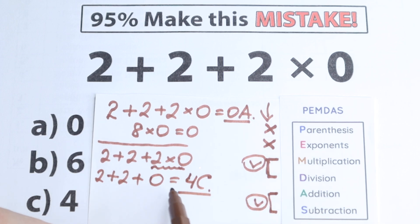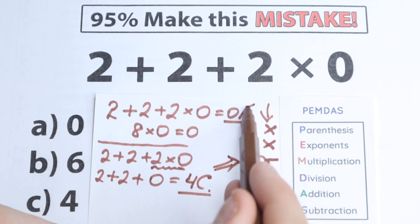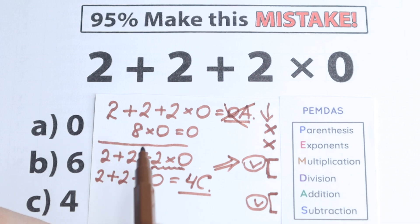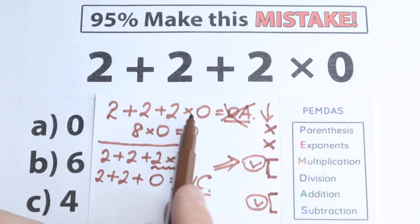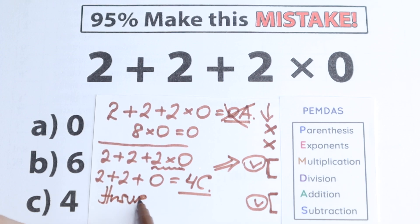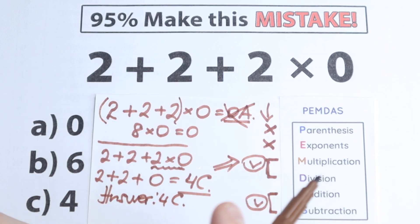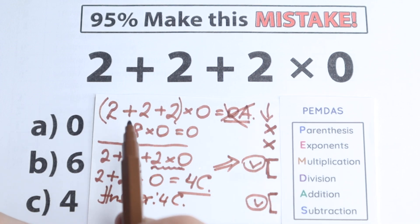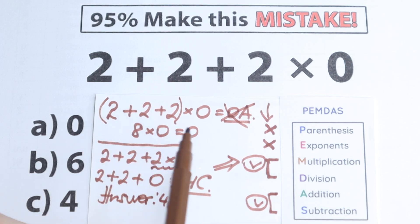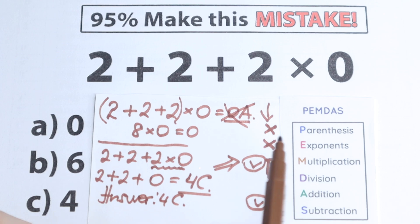So we have two solutions but only one is correct. The correct answer is 4 — option C — because we solved it according to PMDMC. The other solution is absolutely wrong. But there is one really important moment: if you put parentheses around the addition, then the first step becomes parentheses — 2 plus 2 plus 2 gives 6, and 6 times 0 gives 0. So with parentheses the answer is 0, but in our case without parentheses, the correct answer is option C: 4.